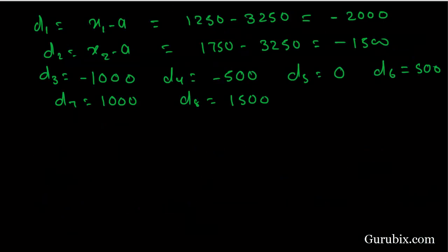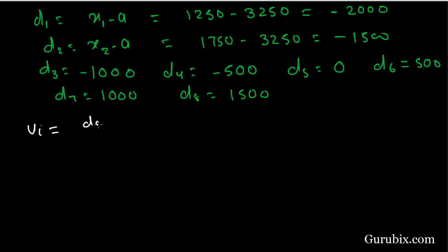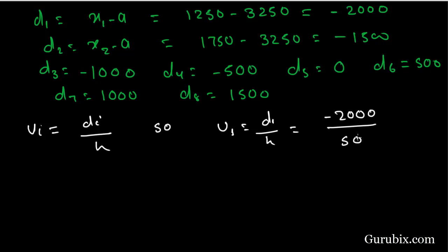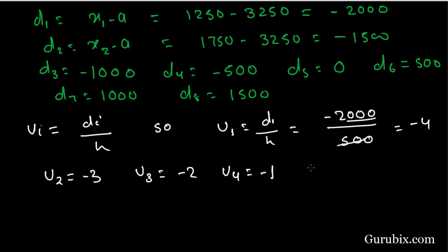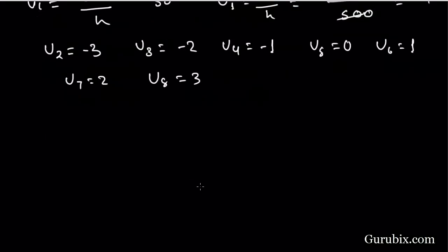Now we have to calculate ui. We know that ui is equal to di divided by h. So u1 equals d1 divided by h, equal to minus 2000 divided by 500, equal to minus 4. u2 is equal to minus 3, u3 is equal to minus 2, u4 is equal to minus 1, u5 is equal to 0, u6 is equal to 1, u7 is equal to 2, and u8 is equal to 3.